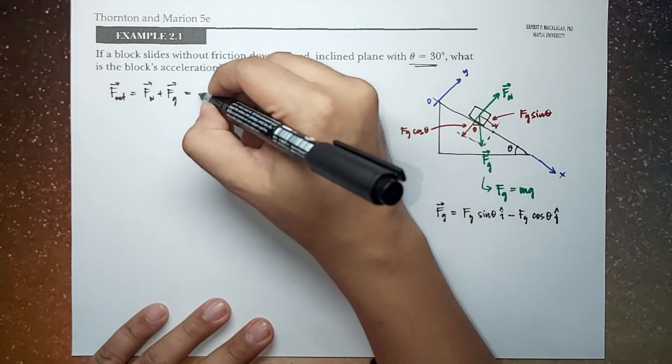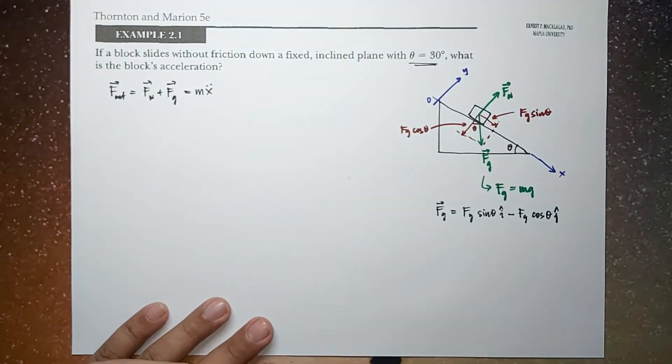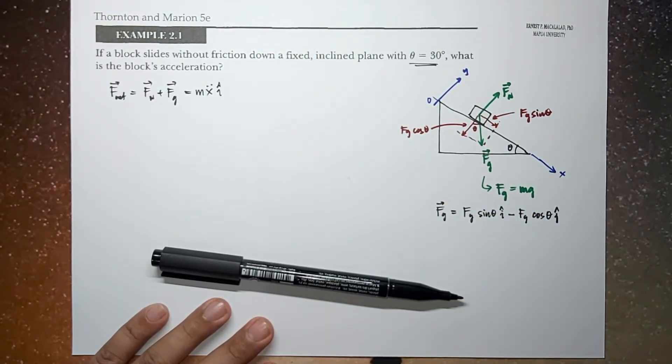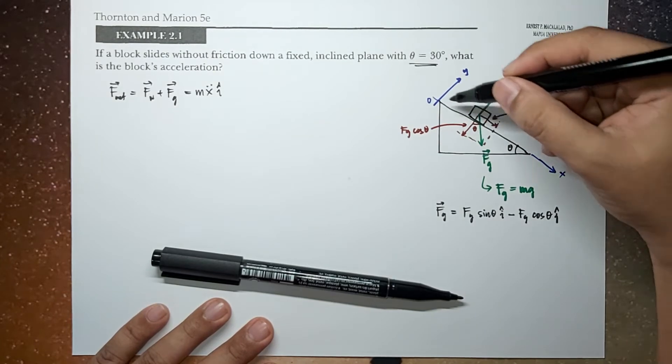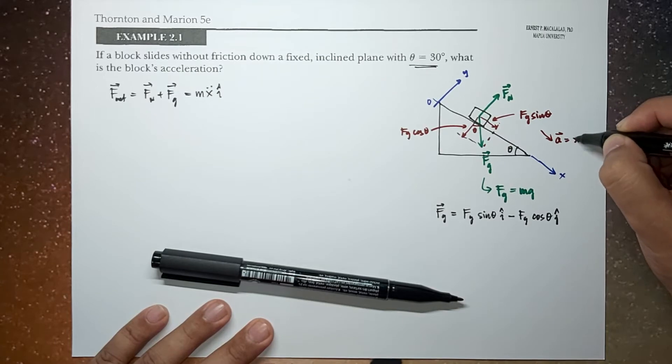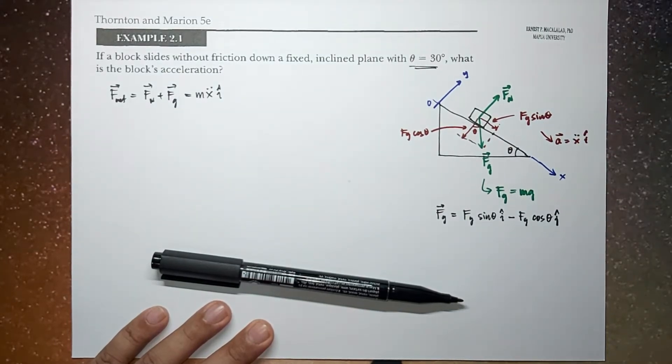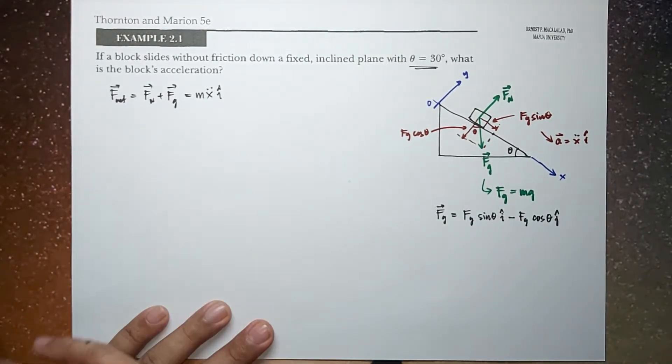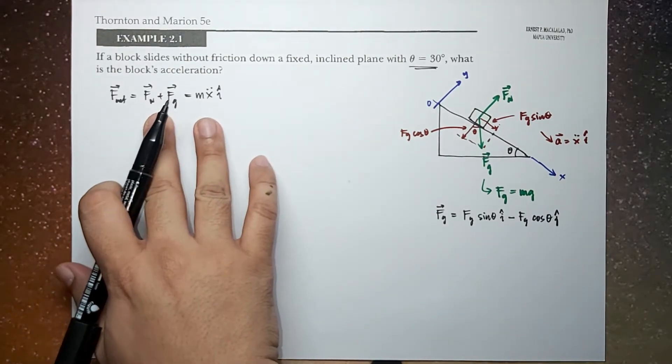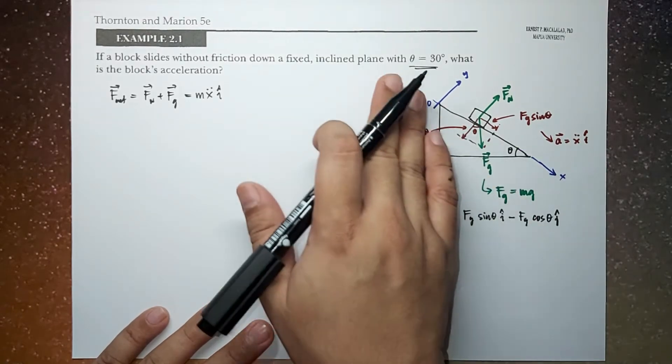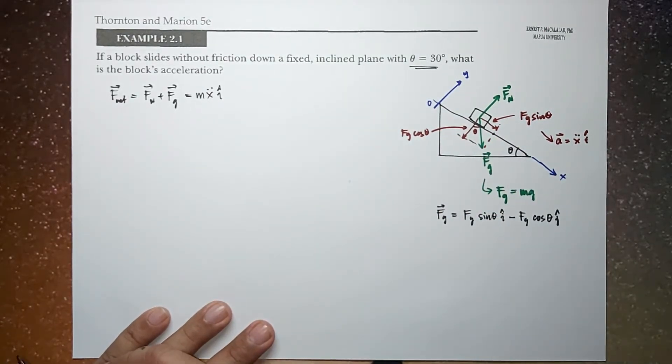And bringing it to Newton's second law, this is equal to M times x double dot i hat. Because here we indicate that the motion will be constrained along the inclined. So that means the acceleration will be along the x direction. So this is very important so that when we calculate the equation of motion, we can set that the motion will be along the x axis.